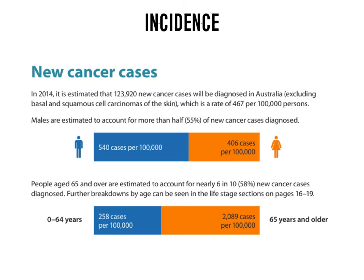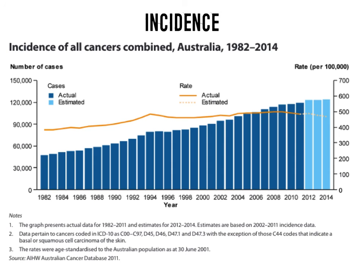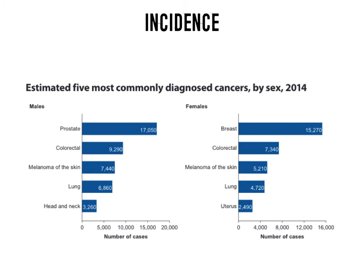There is a greater incidence of cancer in males than females, and a much greater incidence in those 65 years and older. Looking at all cancers combined, we're seeing a steady increase over time. The rate — the proportion per 100,000 — levels out, but the actual number of people diagnosed with cancer is increasing. This could be because there are now far more screening and detection measures available, so more people getting checked means more people being diagnosed.